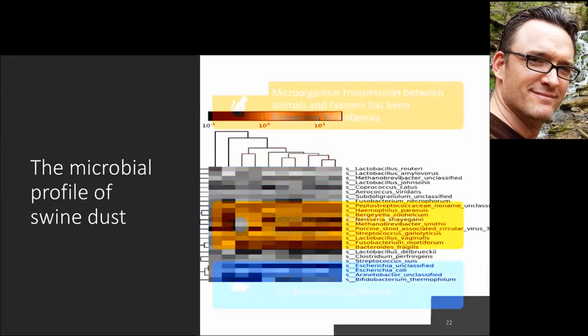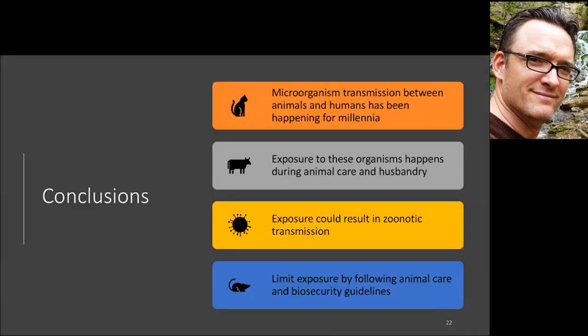Some conclusions: microorganism transmission between animals and humans has been happening for a really long time, and we want to limit this, especially in areas with many host animals. Exposure to these organisms happens during routine animal care and husbandry. We want to limit transmission to prevent the emergence of new zoonotic diseases in humans. You can limit exposure by following animal care guidelines, biosecurity guidelines, basic personal protection, or implementing engineering controls like ventilation systems.